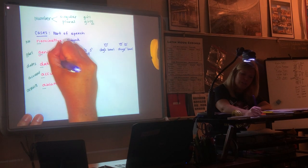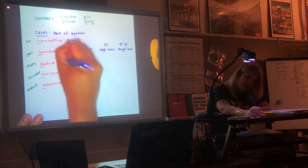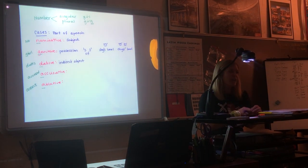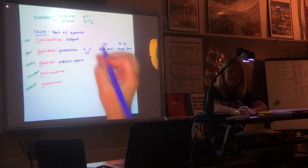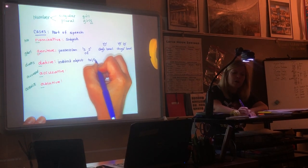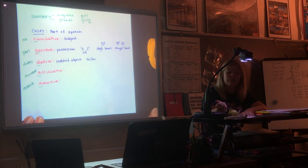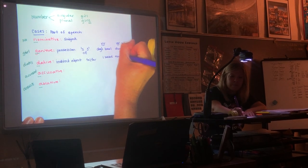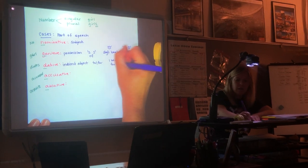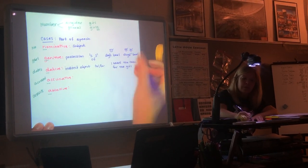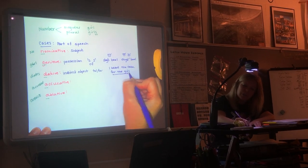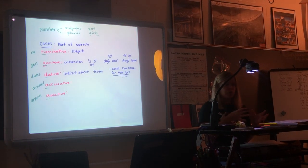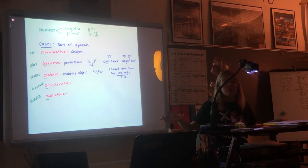The dative case is your indirect object. This is really hard for you to find in English. I have a trick for you. In English, the word 'to' or the word 'for' will always come before the noun. I baked the cake for the girl. The girl is your indirect object. So if it has the word 'to' before it or the word 'for' before it, it's the indirect object.